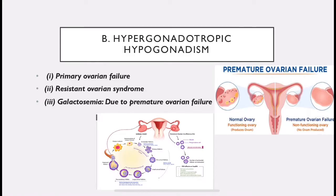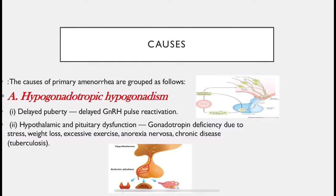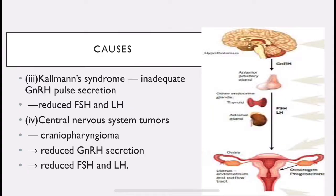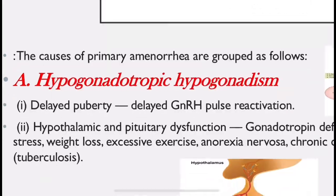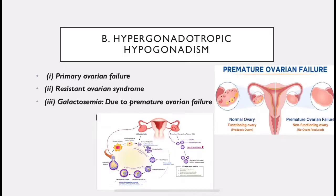Now, hypergonadotrophic hypogonadism: here, GnRH release is normal (hypergonadotrophic), but the gonads are underperforming (hypogonadism) — the problem lies in the ovaries, not in GnRH. Primary ovarian failure and resistant ovarian syndrome are the main conditions.